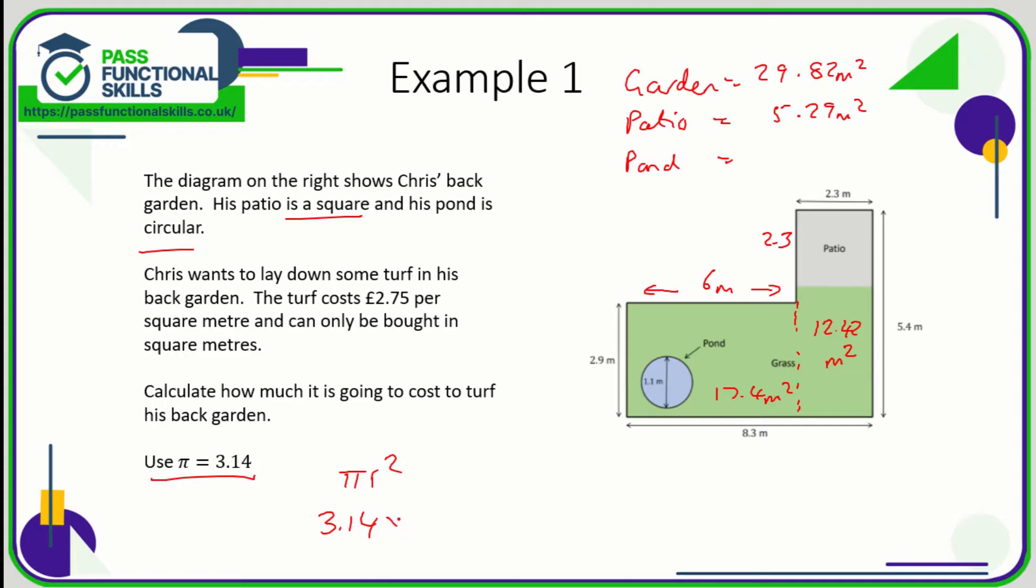So we need to multiply π by 0.55 twice. 3.14 times 0.55 times 0.55 is 0.94985.